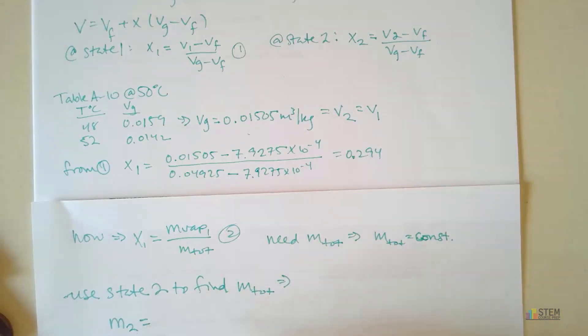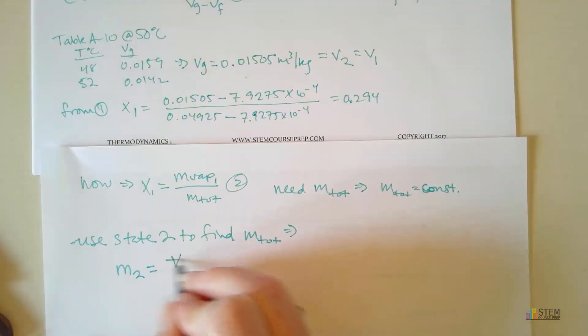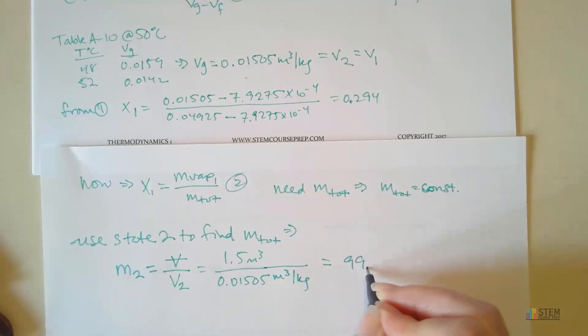So let's use state 2 to find that total mass. So M2, that's just our total mass at state 2. It's going to be the volume over the specific volume at state 2. We've got these two numbers. So we've got 1.5 cubic meters, we're going to divide it by 0.01505 cubic meters per kilogram. Now this gives us 99.67 kilograms. And that's M2.